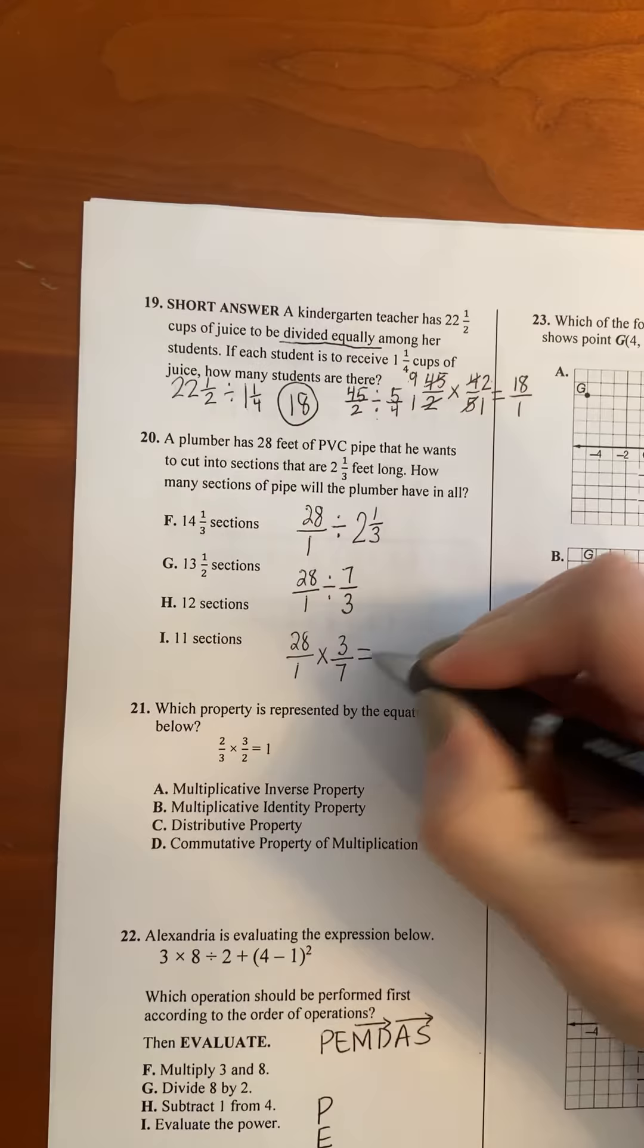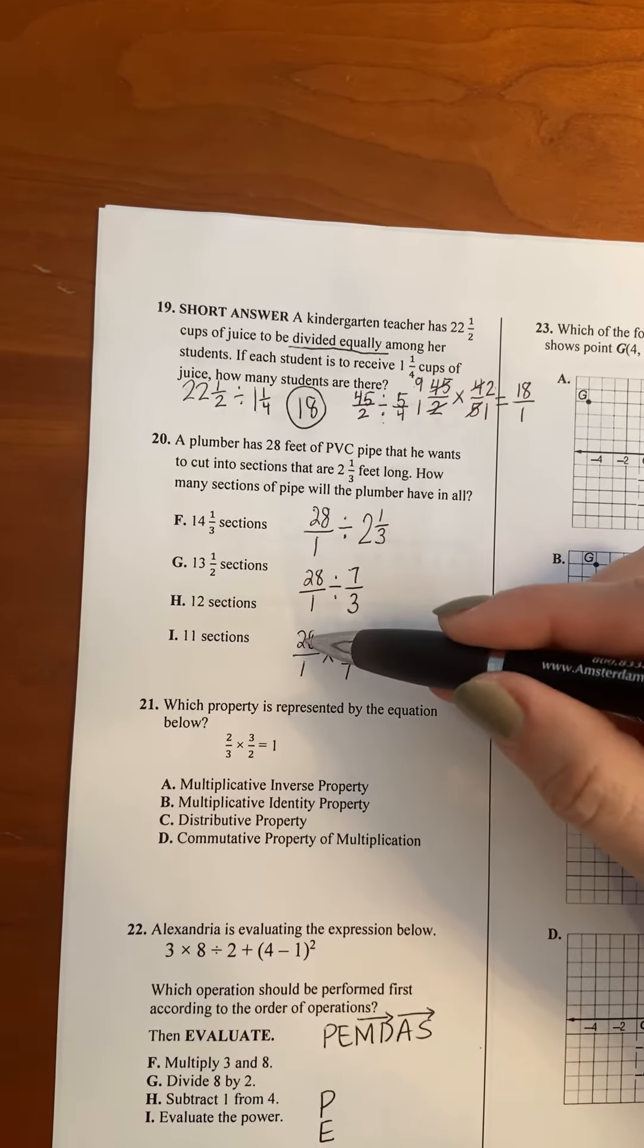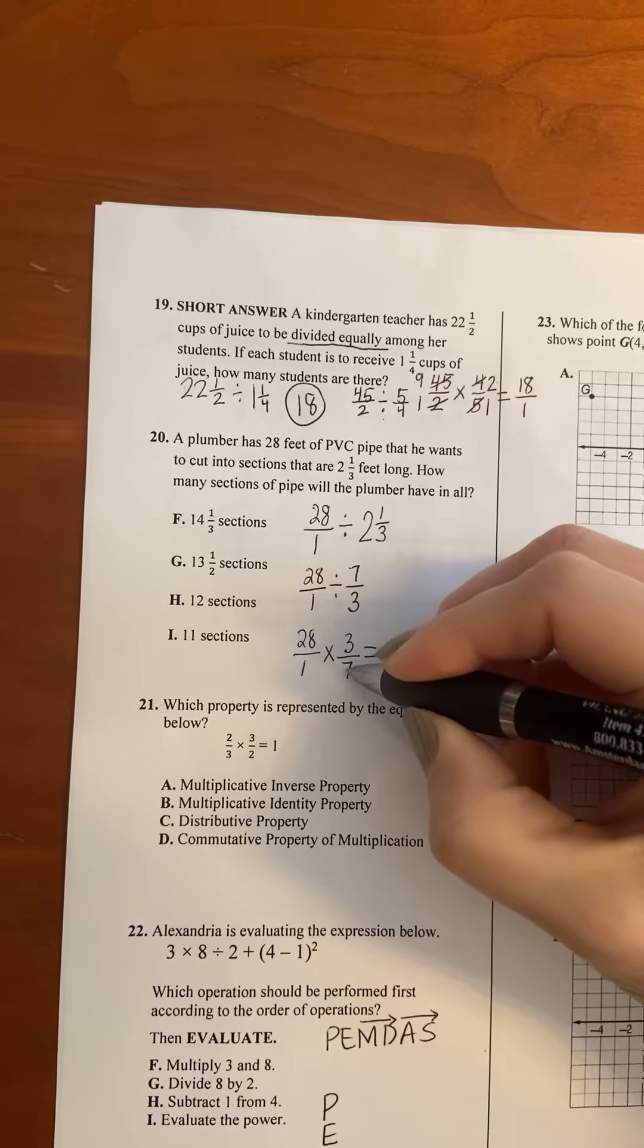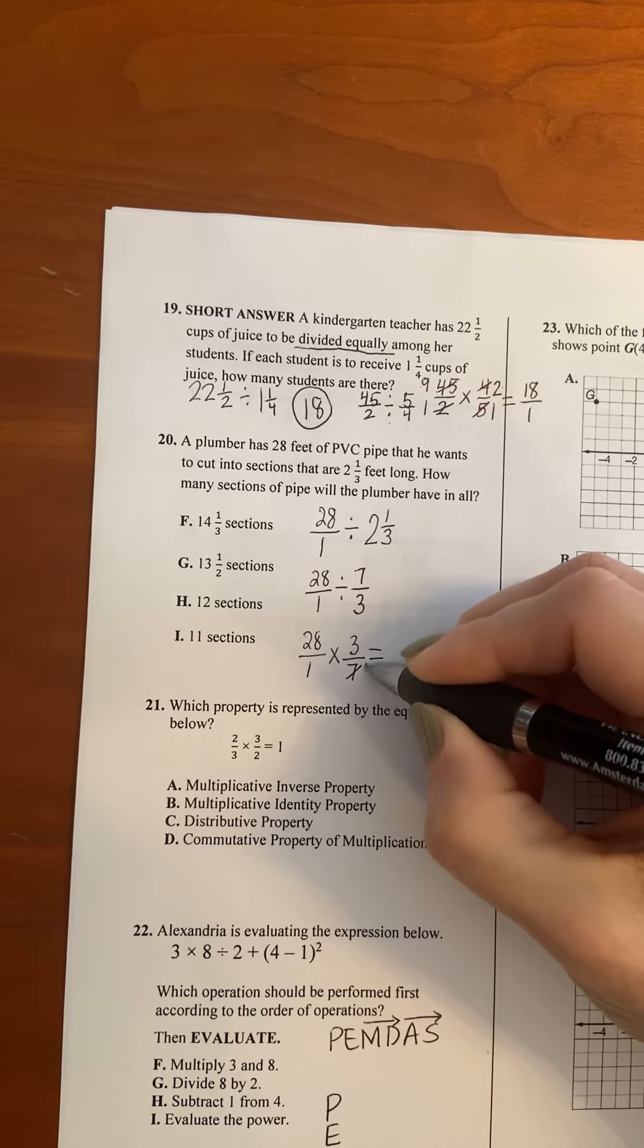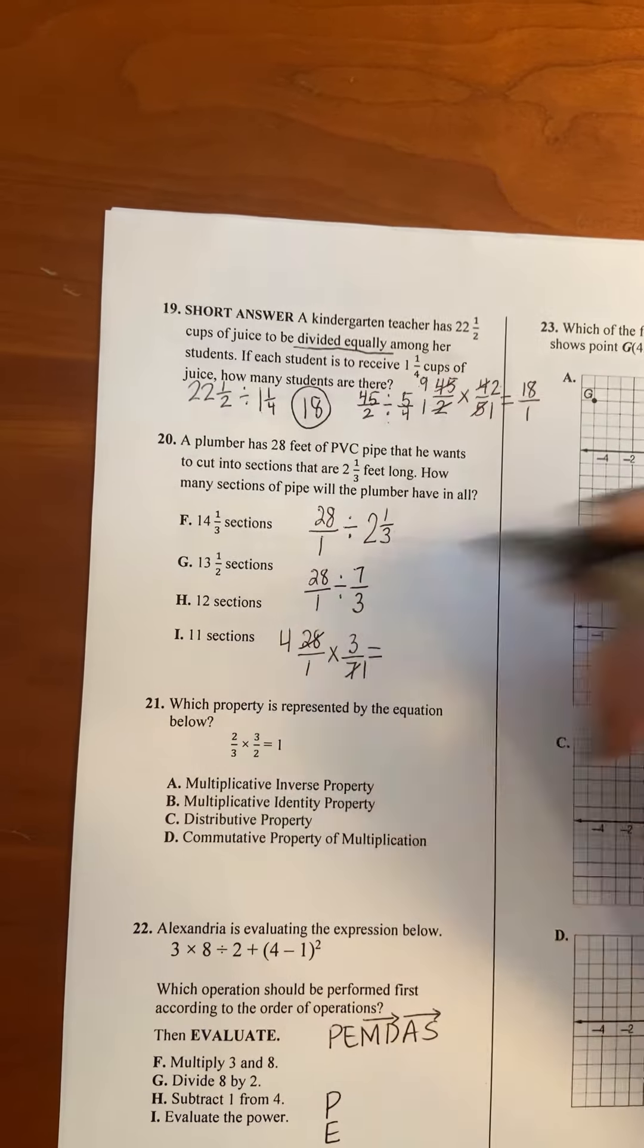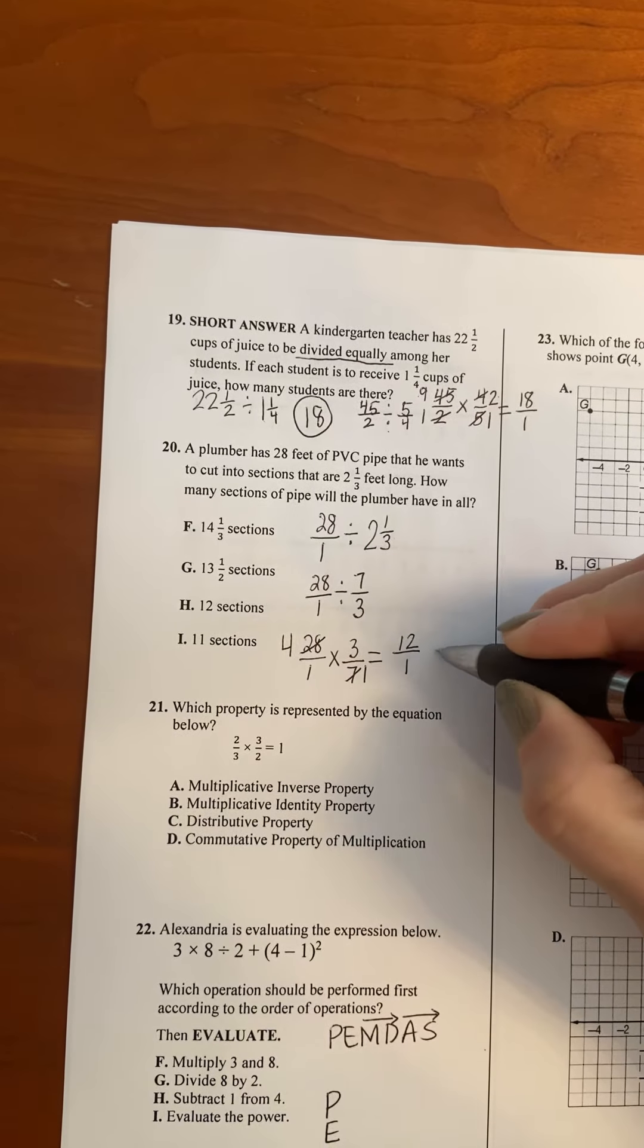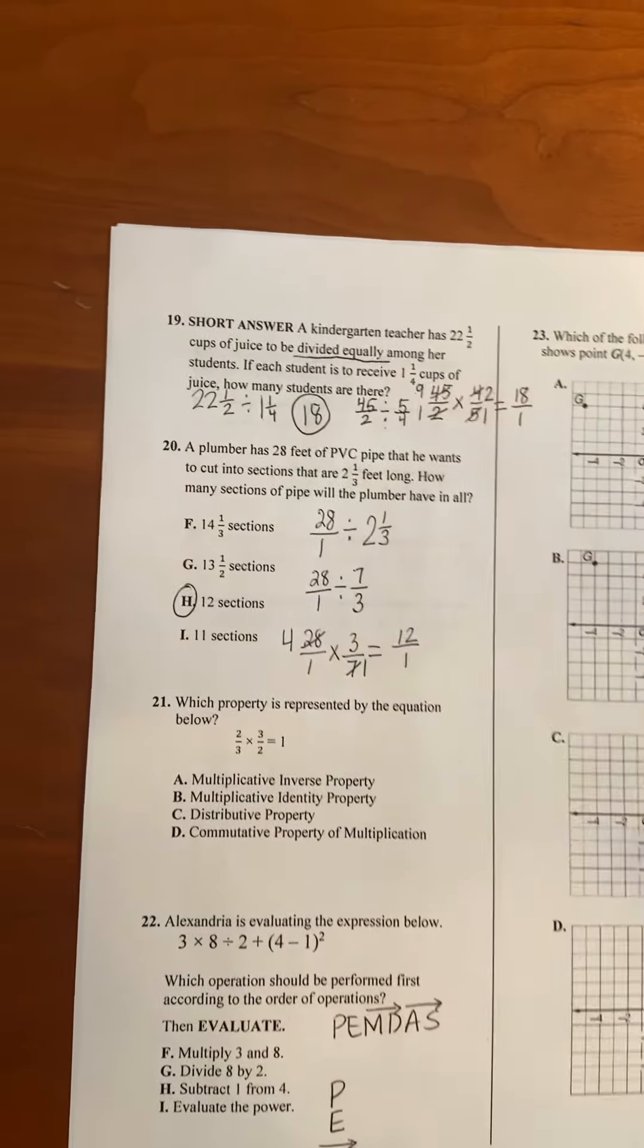Okay, so we can multiply straight across. I am noticing though that 28 and 7 have a common factor, and I think I'd rather simplify before I multiply. So 28 and 7 are both divisible by 7. 7 divided by 7 is 1, 28 divided by 7 is 4. 4 times 3 is 12, 1 times 1 is 1, so 12 over 1 is just 12. So the pipe will be split into 12 sections.